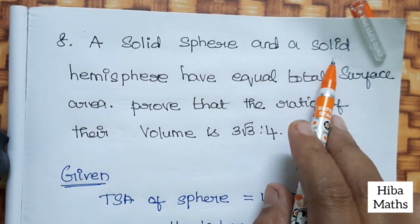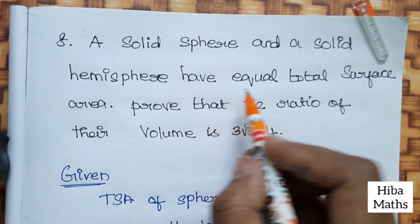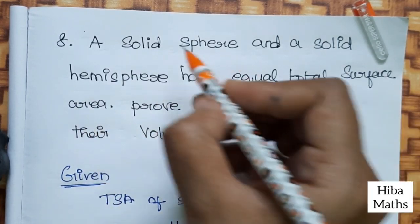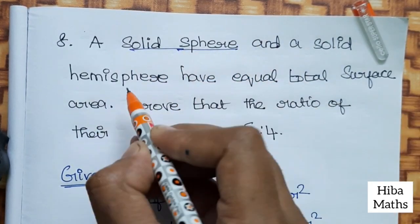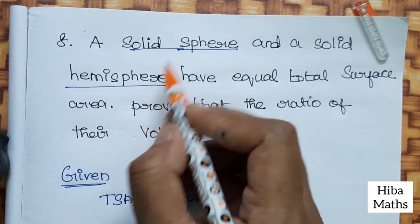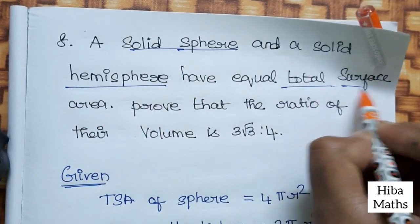A solid sphere and a solid hemisphere have equal total surface area. We are going to compare two values: one is a solid sphere, one is a solid hemisphere. The two values are equal to the total surface area.